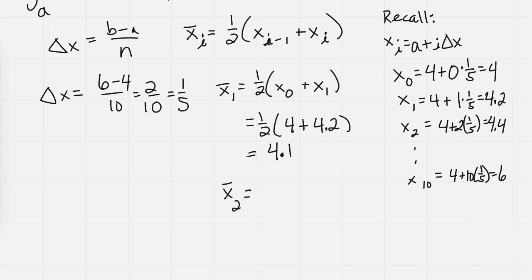x bar sub 2, that would be equal to 1 half of x sub i minus 1, which is x sub 2 minus 1, so that's x sub 1, plus x sub i which is x sub 2. So there's no bars on these x's in the parentheses, because we're taking the actual x values, and the x bar is representing the midpoint of those values.